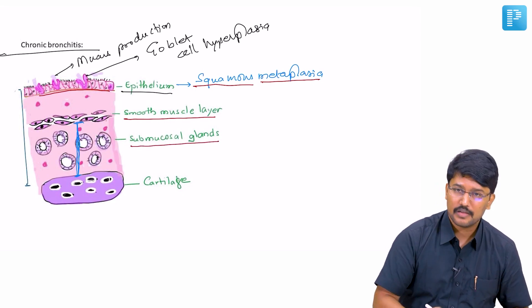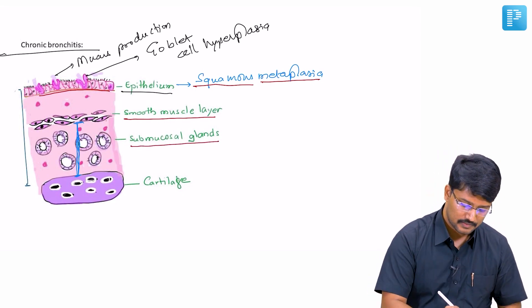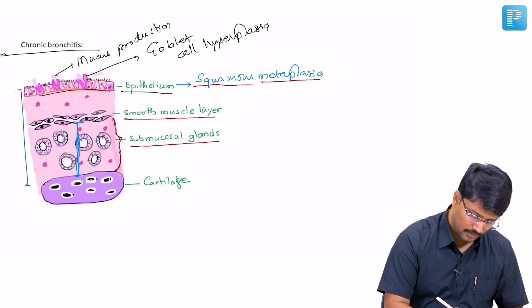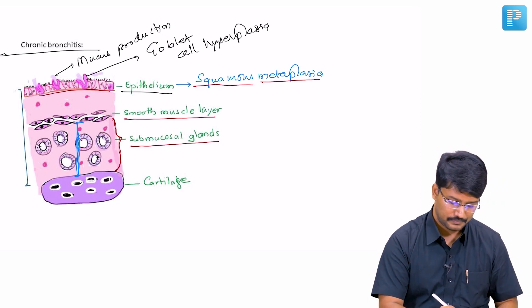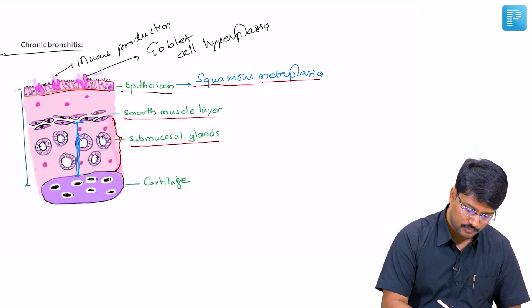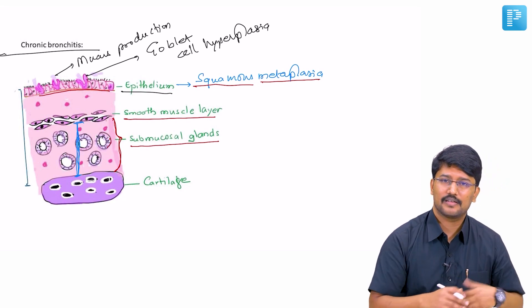The striking finding we notice in this slide is the hyperplasia of submucosal glands. So, there is more number of submucosal glands than a normal counterpart.